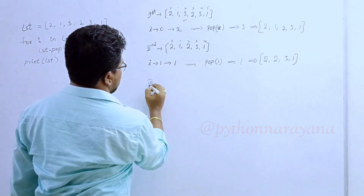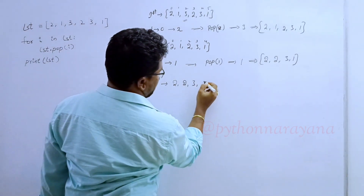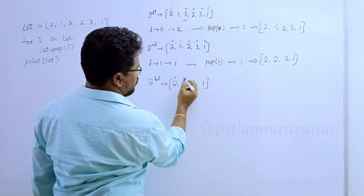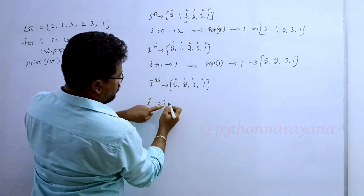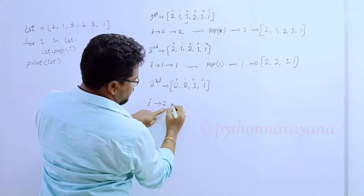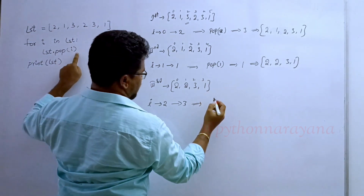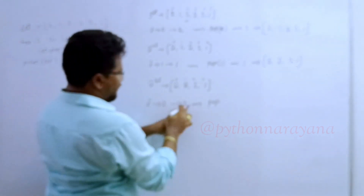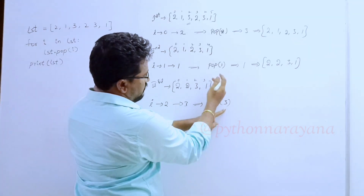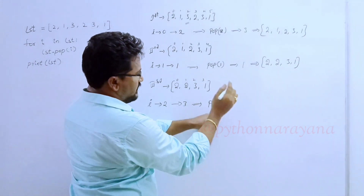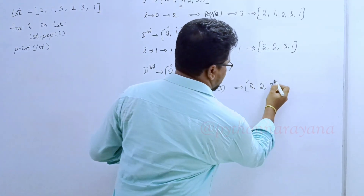Now, iteration 3. What is the remaining list here? Present list: 2, 2, 3, 1. Index numbers are 0, 1, 2, 3. Third time, i-value is index number 2. At index number 2, what is there? 3 is there. So pop(i) — i-value is 3. It takes 3 as index number. In the present list, at index number 3, that element will be deleted — that is 1. The remaining list is 2, 2, 3.